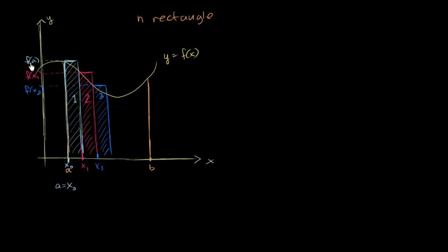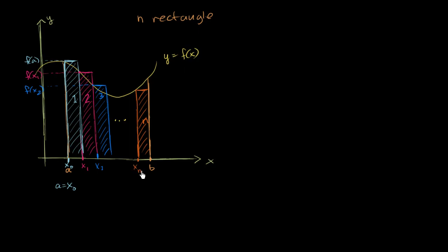And we're going to continue this process all the way until we get to rectangle number n. So this is the nth rectangle right over here. We already see a pattern: the left boundary of the first rectangle is x sub 0, the second is x sub 1, the third is x sub 2, so the left boundary of the nth rectangle is going to be x sub n minus 1. Whatever the rectangle number is, the left boundary is x sub that number minus 1.